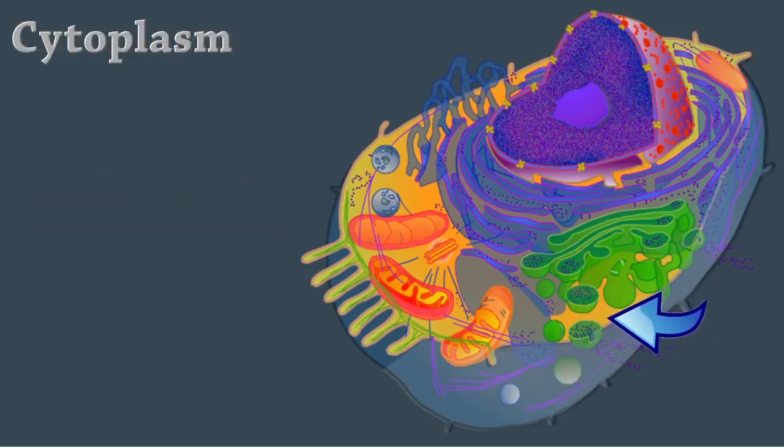The cytoplasm holds all of the organelles, which are specialized subunits within a cell. There are a number of different organelles, and each one performs a specific task.